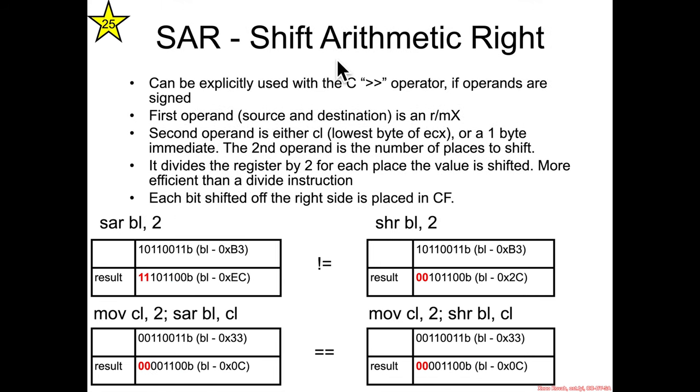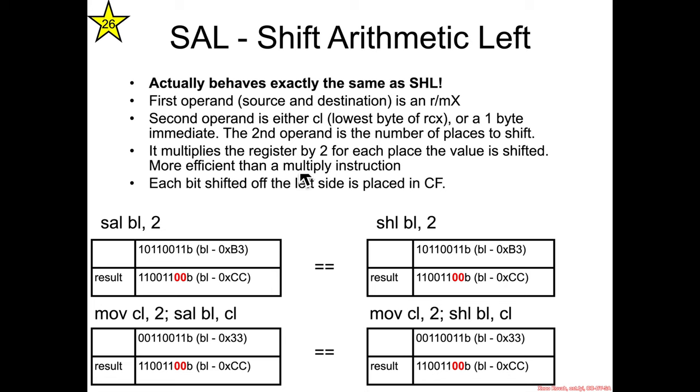So as before, both with the shift arithmetic right and the shift arithmetic left, the bits that get shifted off—the last bit to essentially get shifted off—goes into the carry flag in the r flags register.